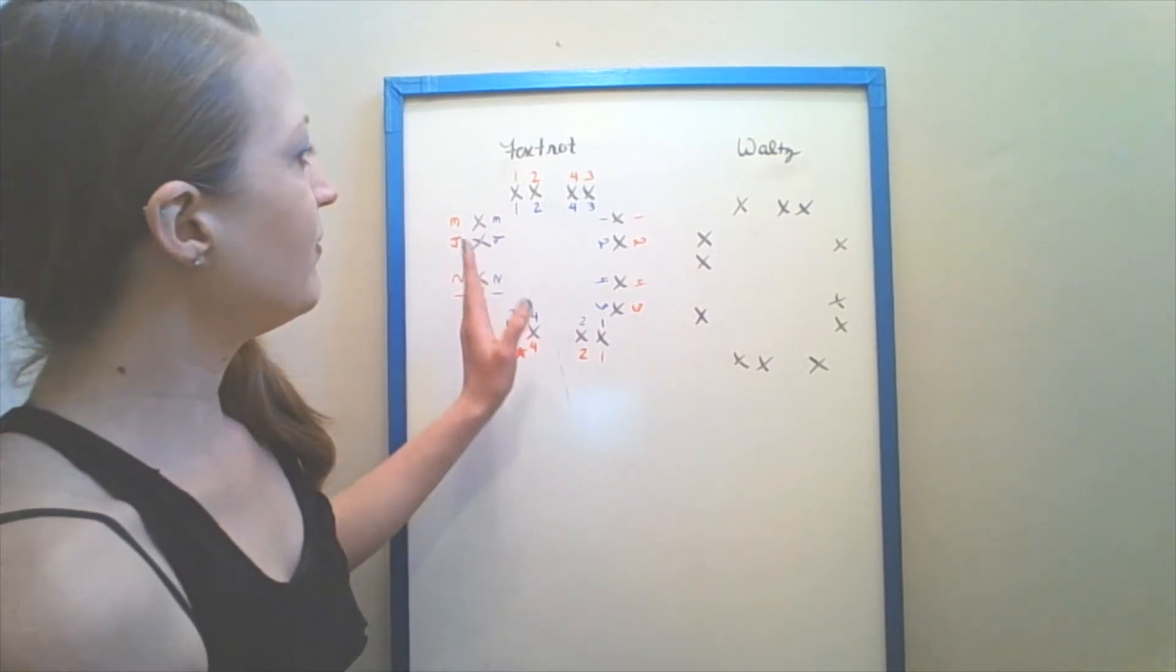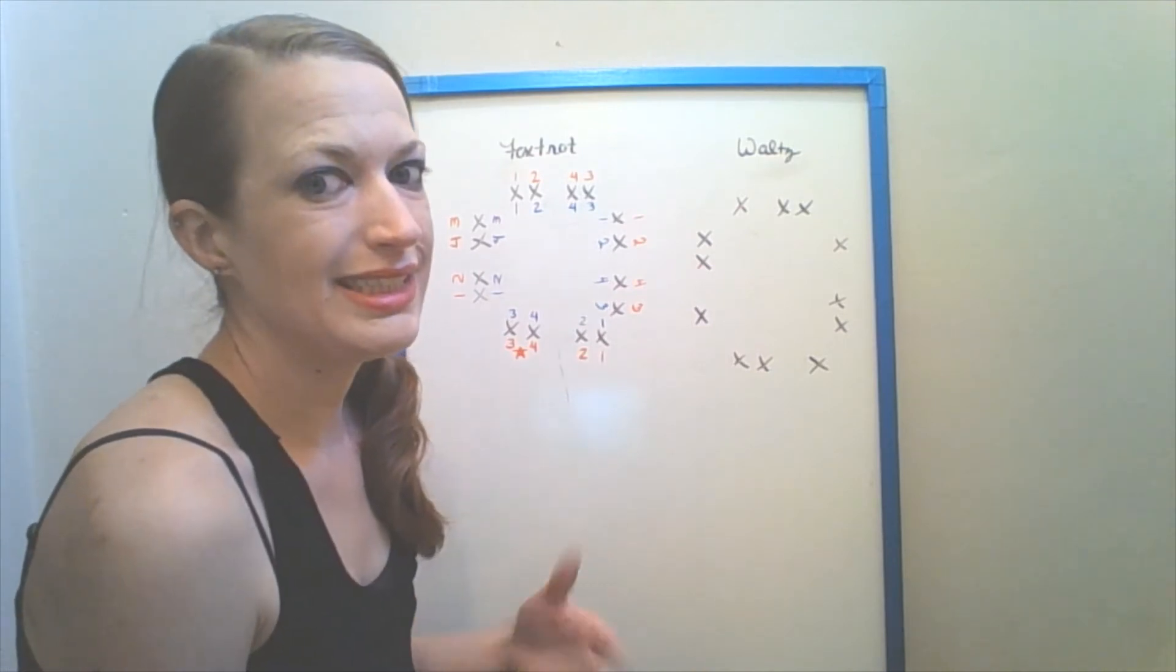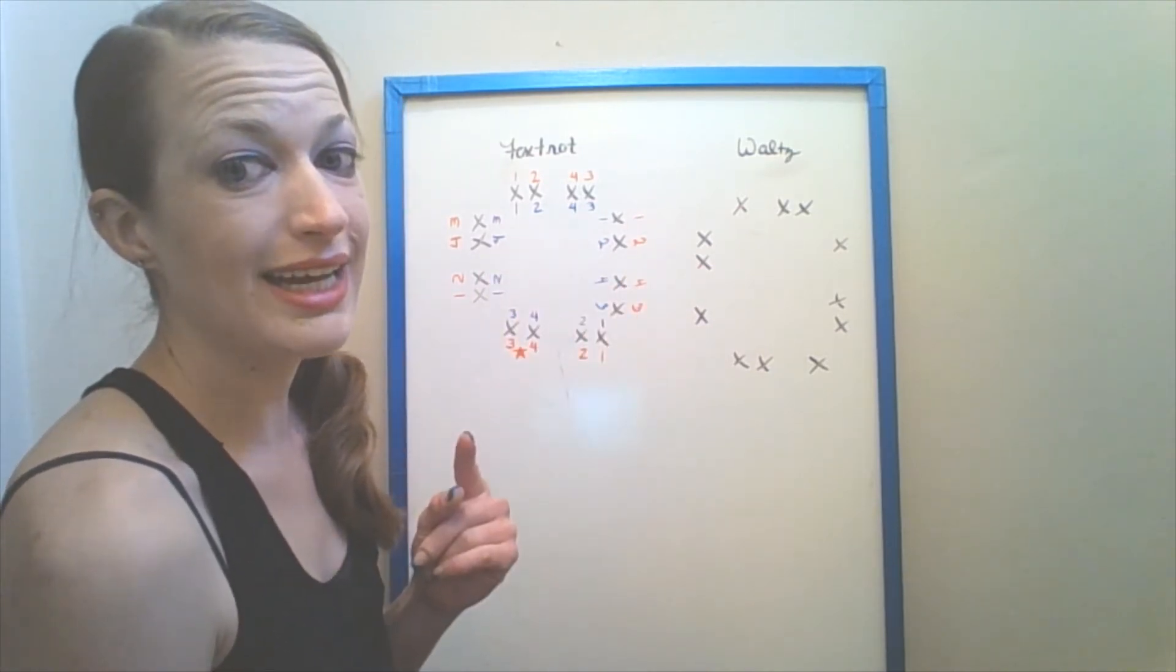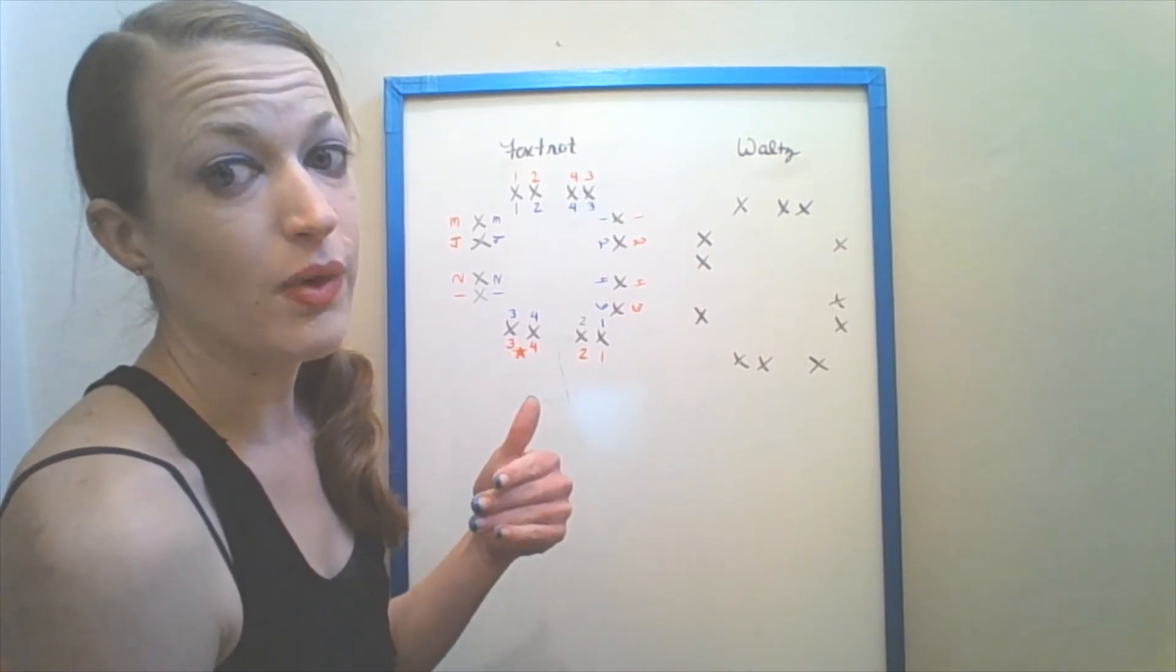You need to see that this is an entire step. You cannot view it as starting a new step every time you face a new wall. You have to see that this is one complete step. You will have done your right side, left side, right side, left side if you're a follower, vice versa if you are a leader.